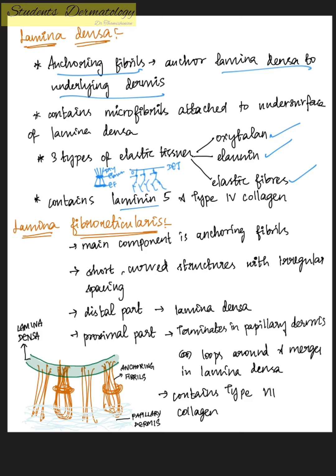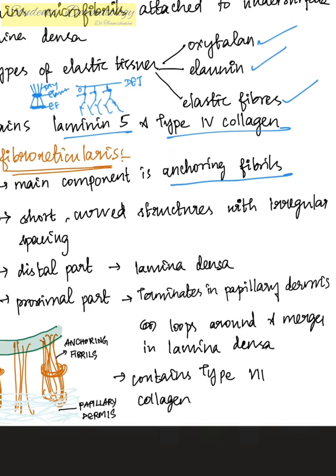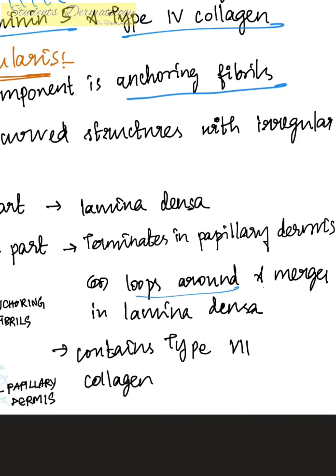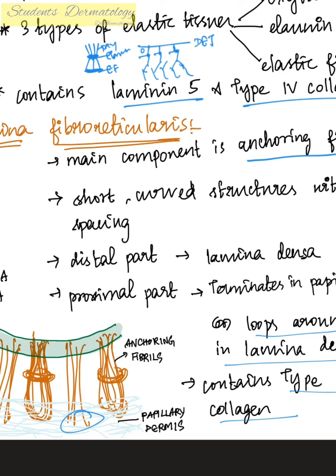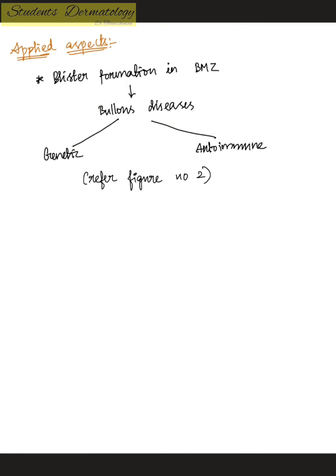The lamina fibro-reticularis contains mainly type 7 collagen in its anchoring fibrils, which are curved structures with irregular spacing that form loops and merge with the lamina densa. The applied aspects of the dermo-epidermal junction are mainly autoimmune disorders — autoimmune bullous disorders — that can form due to abnormalities in the proteins of the basement membrane zone.